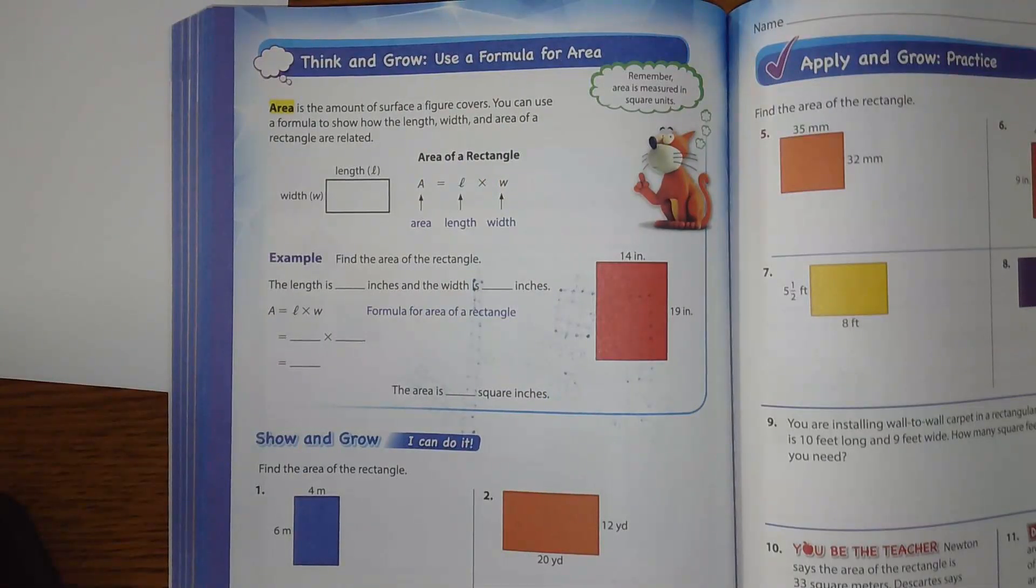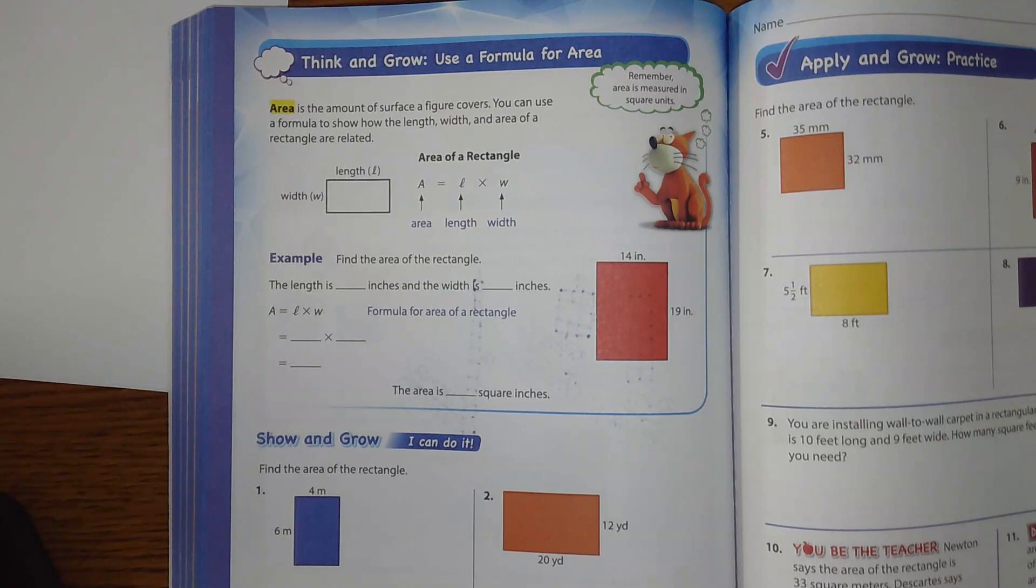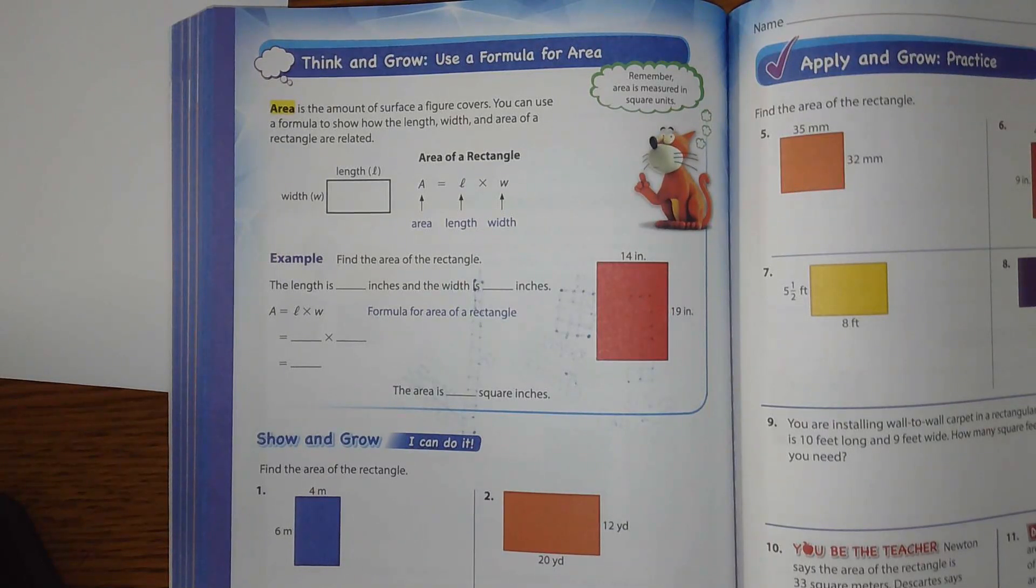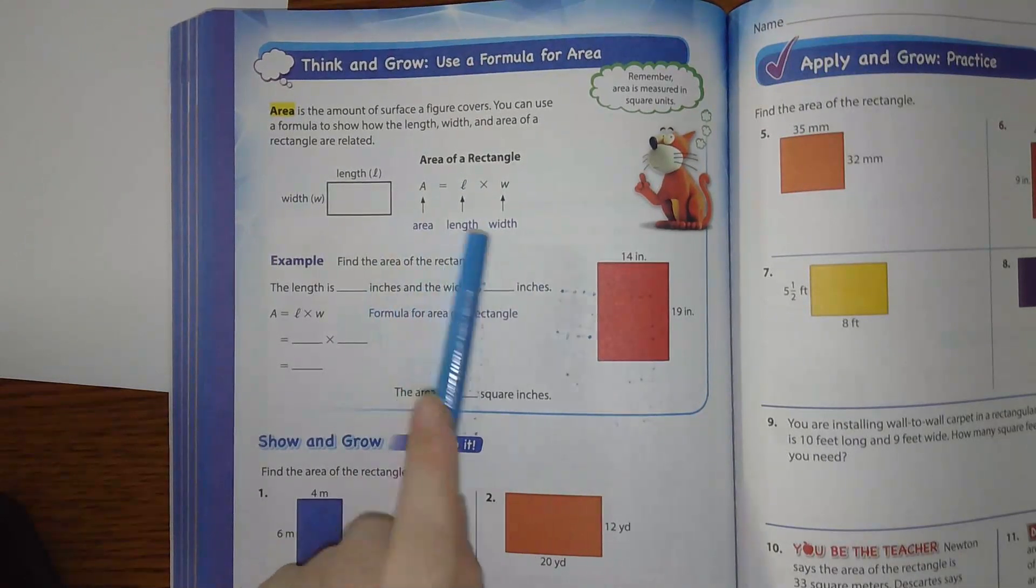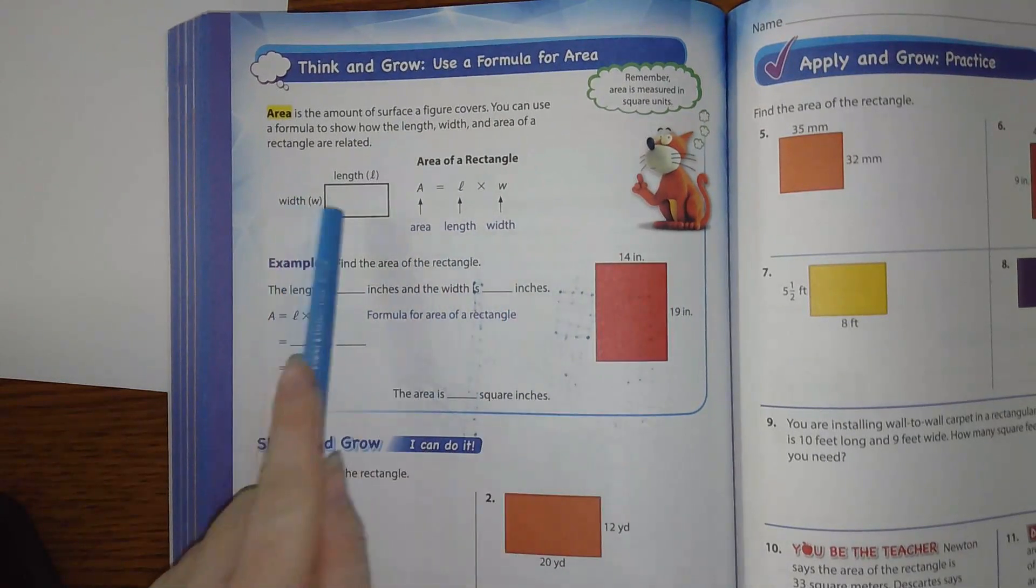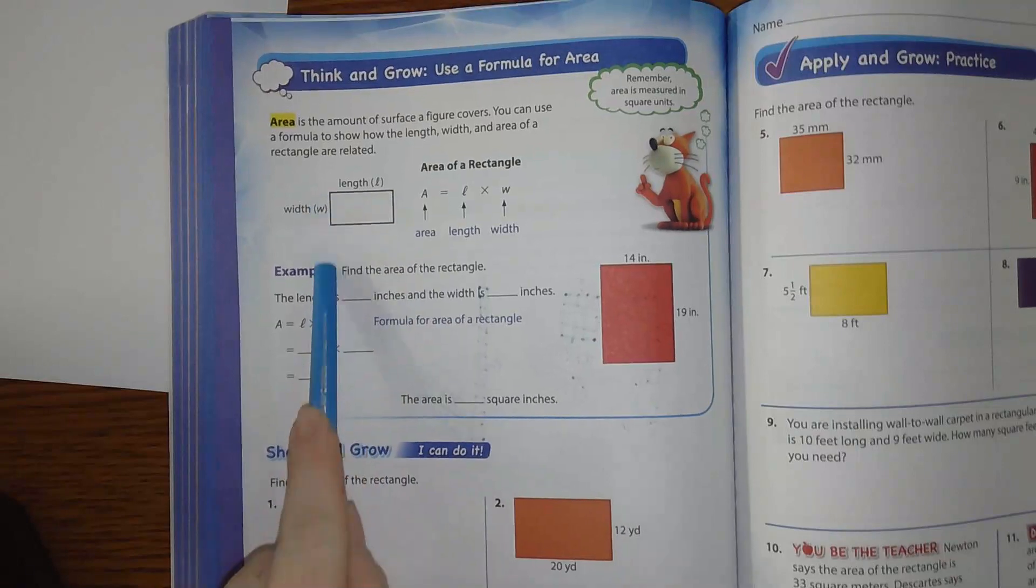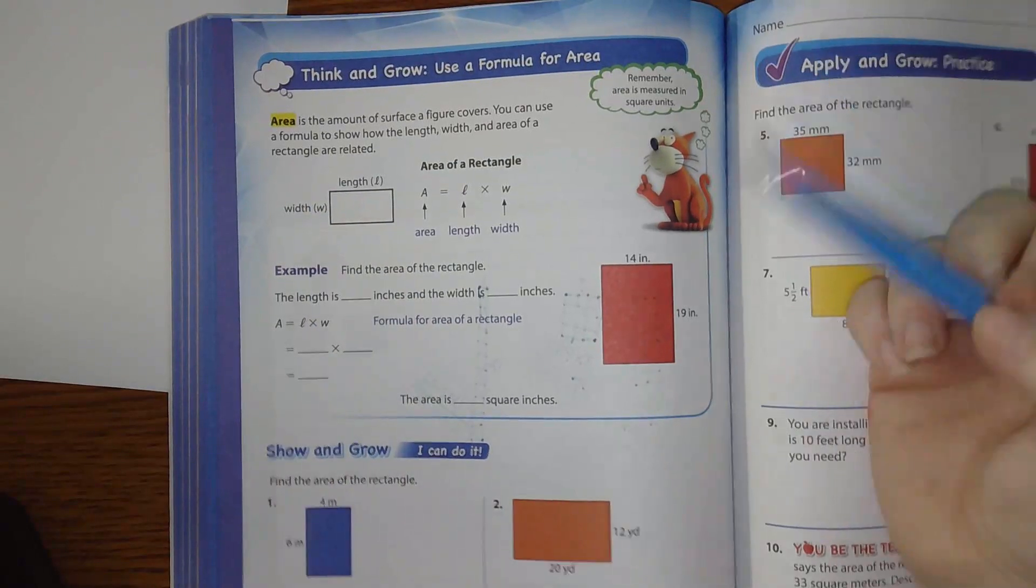Okay, starting off at the top of the page, our Think and Grow says use the formula for area. The area of the rectangle is area equals length times width. Okay? Length is here.